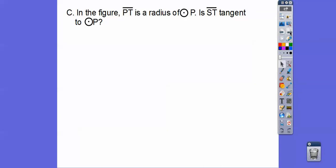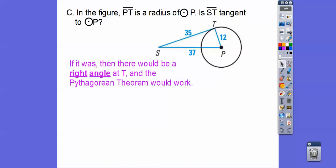All right, so in the figure here, segment PT is a radius of circle P. So the converse is true. If it's perpendicular, it's tangent. That's correct. All right, so if it is tangent, then that means that there's going to be a right angle there. So if it's a right angle there, then we can use the Pythagorean theorem.